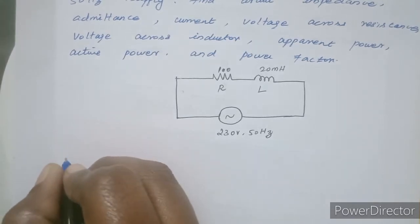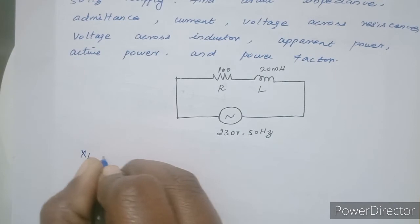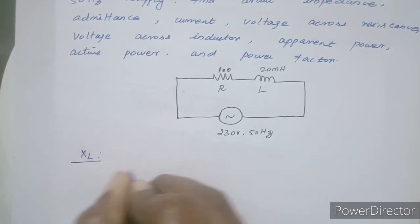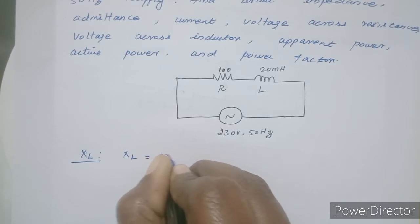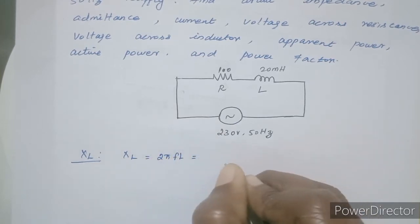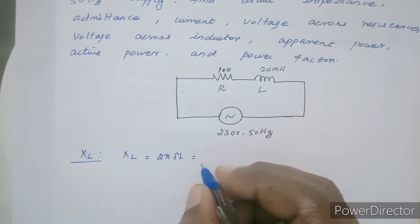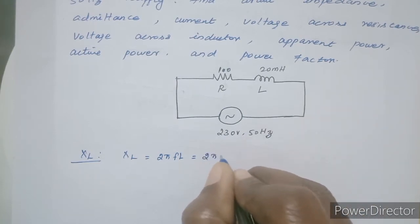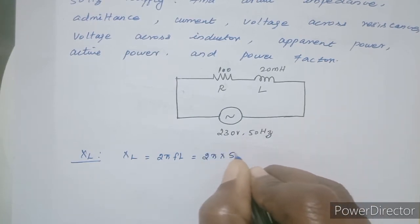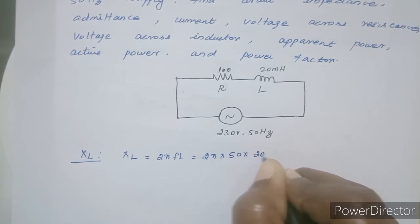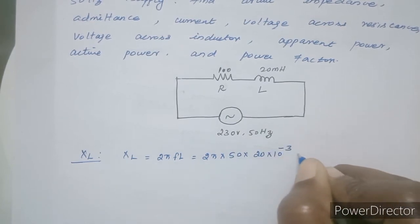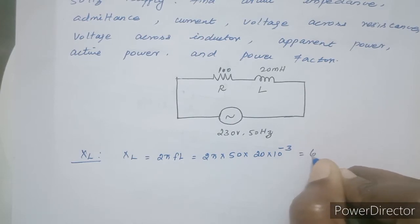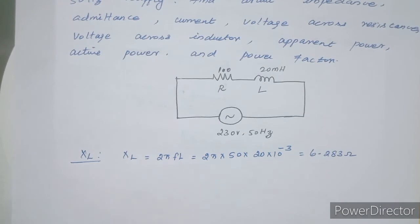First, calculate the inductive reactance XL. XL is equal to 2πFL. That is 2π × 50 × 20 millihenry, which equals 2π × 50 × 20 × 10⁻³, giving XL = 6.283 ohms.